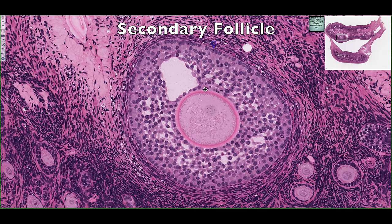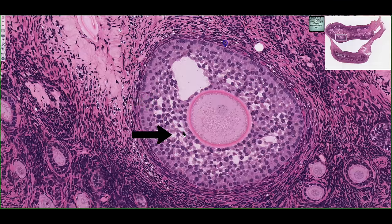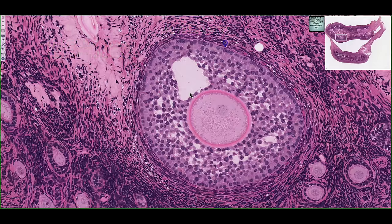This is a secondary follicle. Right away we can notice that it has multiple layers of granulosal cells. Amongst the granulosal cells, we see these white spaces — fluid that's starting to build up. In some cases, all these pockets of fluid coalesce into one single chamber called an antrum. The antrum is filled with a fluid called liquor folliculi, which contains many hormones such as progesterone, estradiol, inhibin, folliculostatin, and activin.